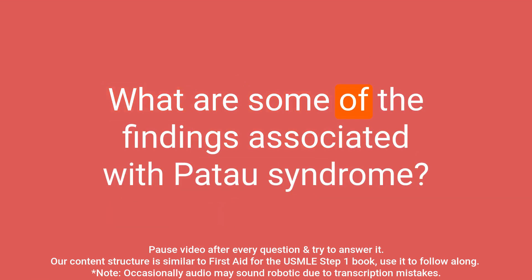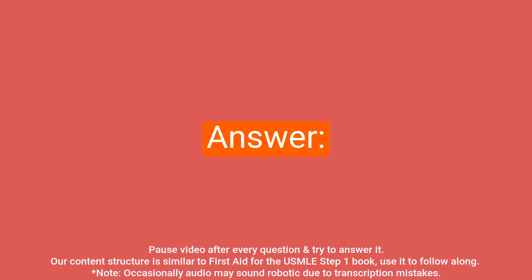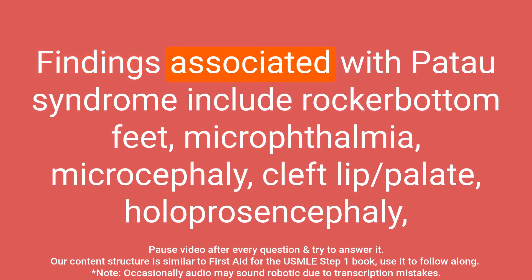Question: what are some of the findings associated with Patau syndrome? Answer: findings associated with Patau syndrome include rocker bottom feet, microphthalmia, microcephaly, cleft lip, palate, and holoprosencephaly.